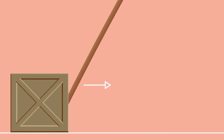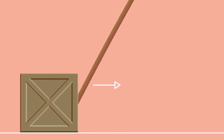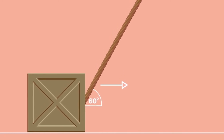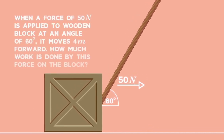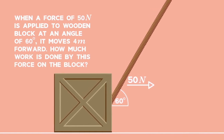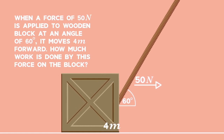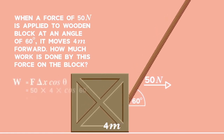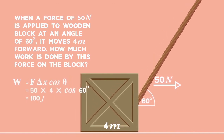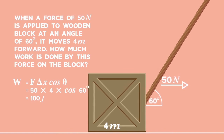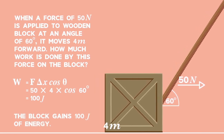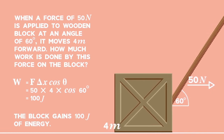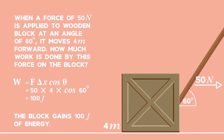Now let's try a calculation when the force and displacement are in different directions, with an angle of 60 degrees between them. When a force of 50 newtons is applied to a wooden block at an angle of 60 degrees, it moves 4 meters forward. Work done equals 50 times 4 times cosine 60 degrees, which gives an answer of 100 joules. The block gains 100 joules of energy.